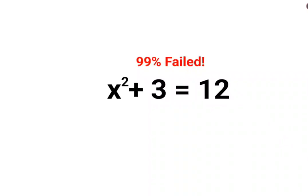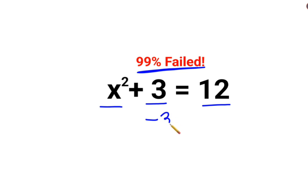Welcome everyone. Today we are going to understand why 99% of people failed in solving this kind of problem. We have x squared plus 3 equals 12. In order to find the value of x, we just subtract 3 on both sides, so we are left with x squared equals 9.